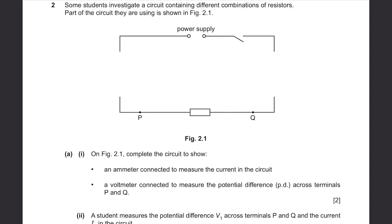Question 2. Some students investigate a circuit containing different combinations of resistors. Part A: on figure 2.1, complete the circuit to show an ammeter connected to measure the current — the ammeter should be in series with the circuit. Then add a voltmeter connected to measure the potential difference across terminals P and Q — the voltmeter should be in parallel with the resistor.